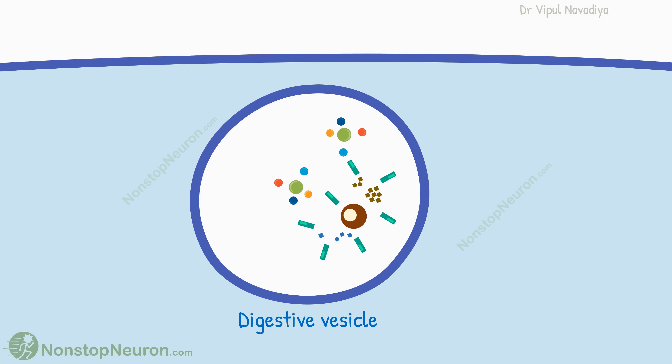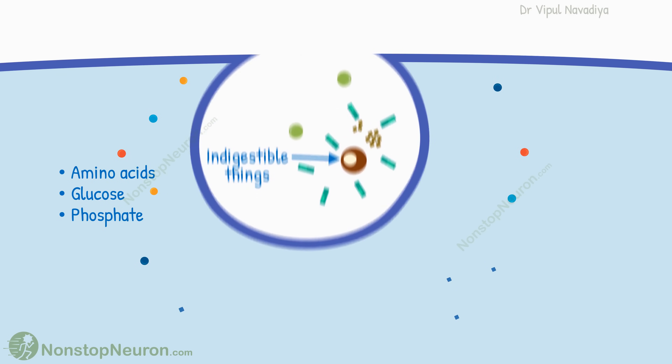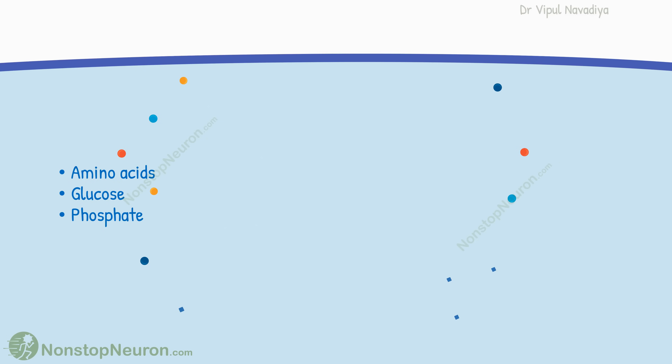Small molecules like amino acids, glucose, phosphate, etc. formed during this digestion cross the membrane and enter the cytoplasm. Indigestible things are left inside the vesicle and are excreted out of the cell by exocytosis.